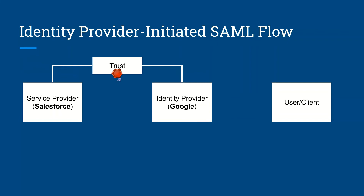Basically, a user wants to access Salesforce, and to authenticate the user we have Google. In the first step, the user logs in to Google, which is the identity provider. The identity provider sends a SAML response to the service provider. The service provider validates the SAML response using the trust that both the service provider and identity provider share between them. Once the service provider validates the SAML response, it will allow the user to access Salesforce.